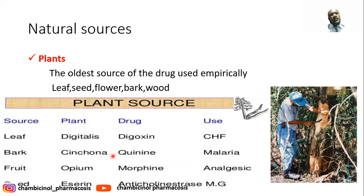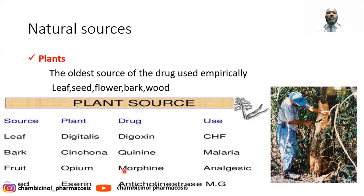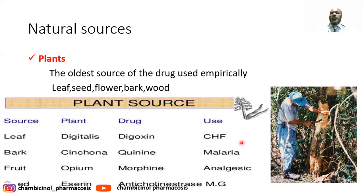We also have morphine, obtained from the opium poppy (Papaver somniferum), specifically the fruit, which is used as an opioid analgesic. As you can see in the picture, it shows how the drug can be collected from the plant — this is quinine extraction from the plant.